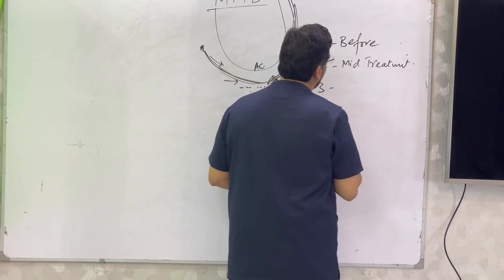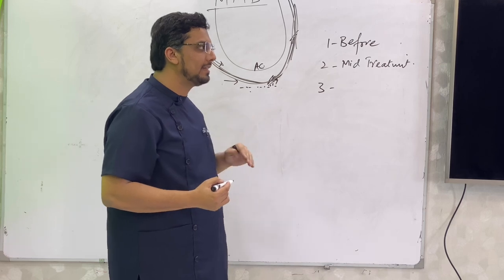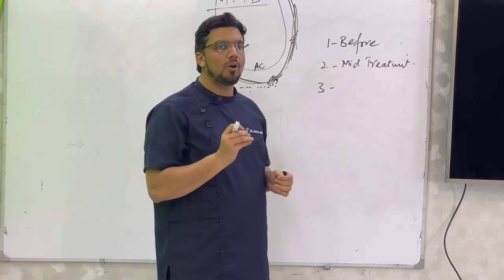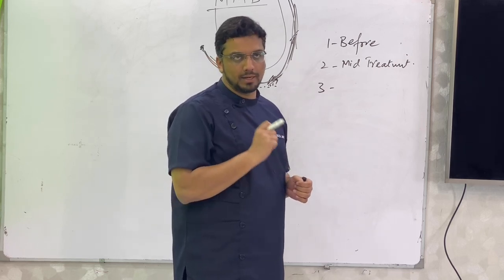The third school of thought which is more prevalent and this is more accepted among the orthodontists is to do frenectomy after the orthodontic space closure of the maxillary midline diastema.